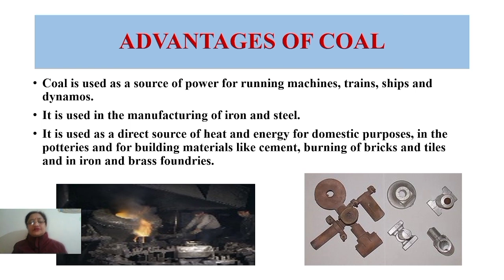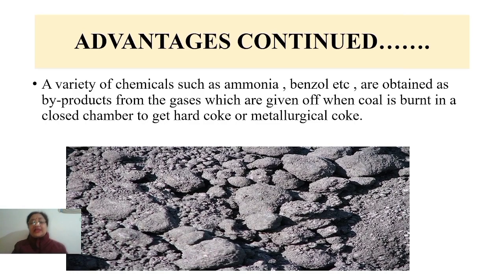The advantages of coal: compared to other fuels, coal is used as a source of power for running machines, trains, ships, and dynamos. It is used in manufacturing iron and steel in large quantities. It is used as a direct source of heat and energy for domestic purposes, in potteries, building materials like cement, burning of bricks in kilns, tiles, and iron and brass foundries. A variety of chemicals such as ammonia and benzol are obtained as by-products from the gases released when coal is burned in closed chambers to produce hard coke or metallurgical coke.